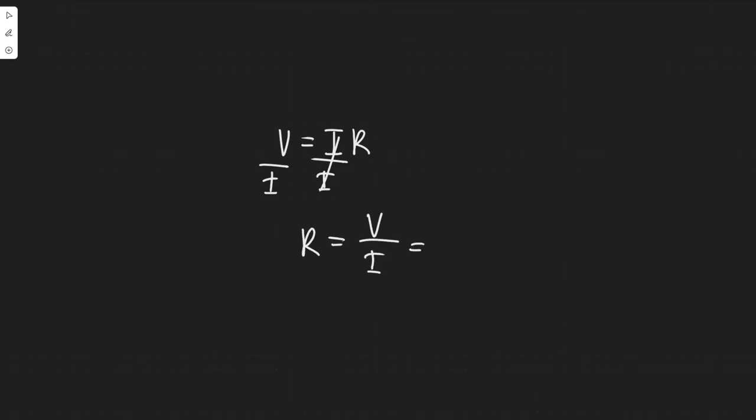So in this problem they tell us 120 volts, our voltage, is going to produce a current of 4.2 amps. So you want to do 120 and then divide it by 4.2.